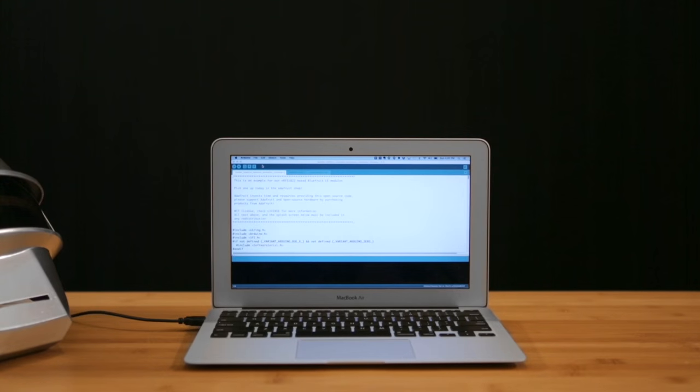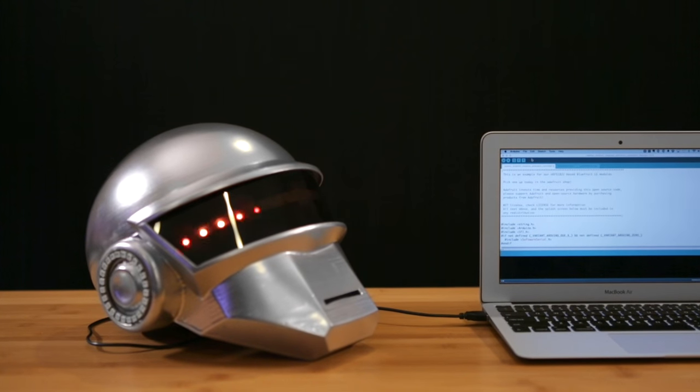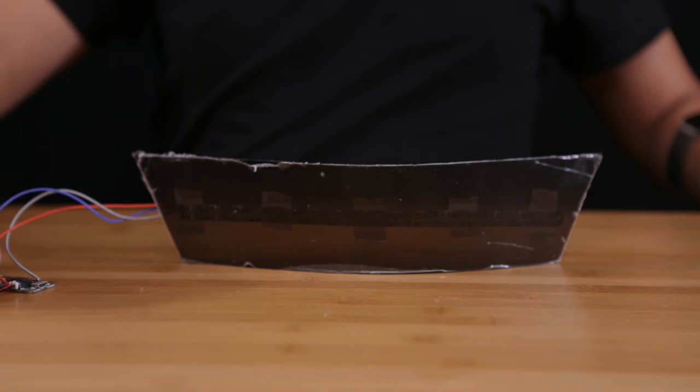You can get the NeoPixel BLE code to program the Adafruit Feather board from the tutorial linked in the description below. Now be sure to test the circuit and check the animations before mounting the electronics to the helmet.